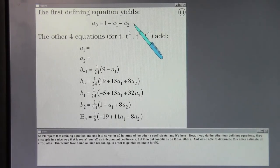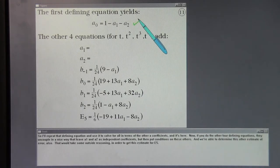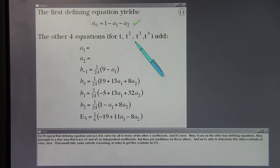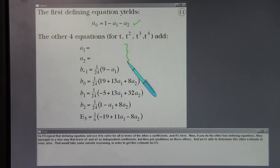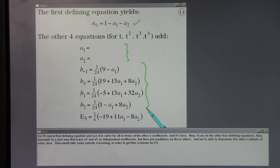So I'll repeat that defining equation and use it to solve for a zero in terms of the other a coefficients. Now if you do the other four defining equations they uncouple in a nice way that leave a one and a two as independent coefficients but then put conditions on these others.